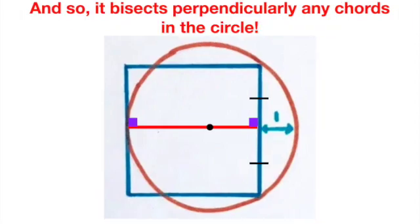Given this fact, since radius of a circle bisects any chords in the circle perpendicularly, we can further see that indeed, the red line bisects the square into two segments of equal length.